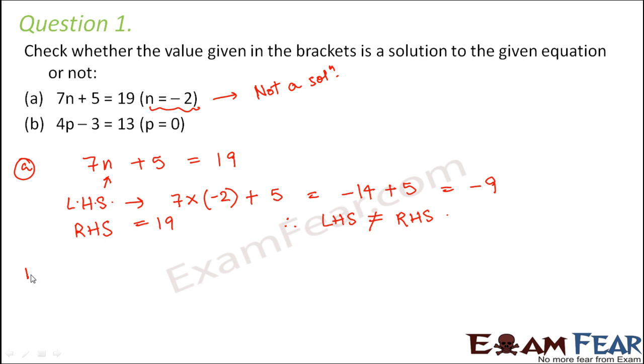Let us try with the next one which is 4p minus 3 equals 13. Here the solution given is p equals 0. Let us put p equals 0 in LHS. It becomes 4 into 0 minus 3 which equals minus 3. And the RHS is 13. So in this case also, LHS is not equal to RHS. Is p equal to 0 a solution? No, this is also not a solution of this equation.